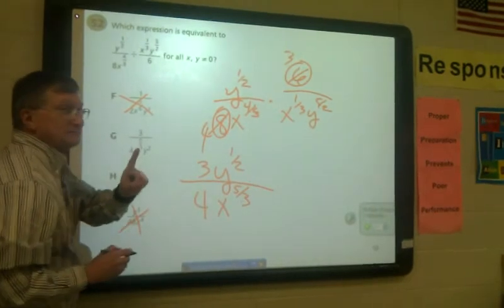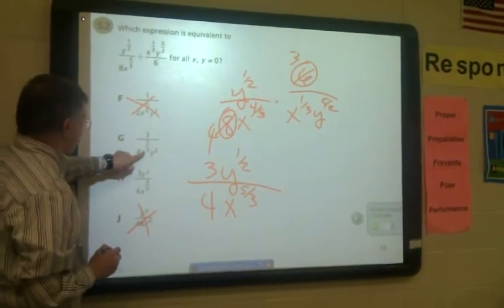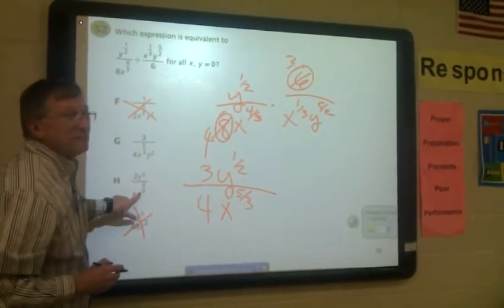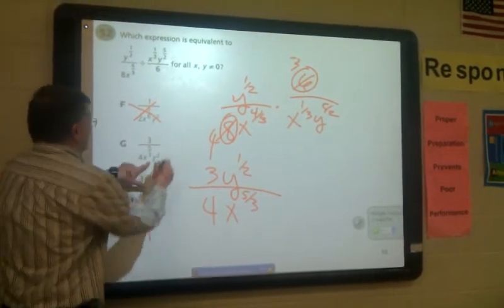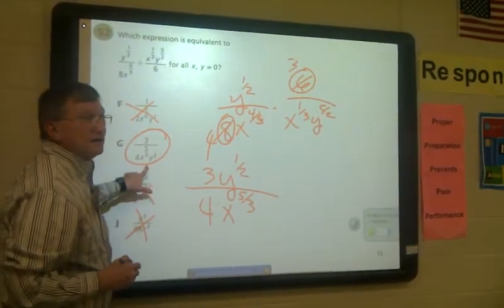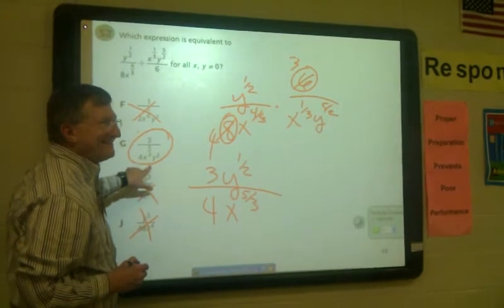Now I've still got the y's to deal with. But look, here's a five-thirds, here's a four-ninths. I found my answer. It's not four-ninths. Here it is. I want to go with that.